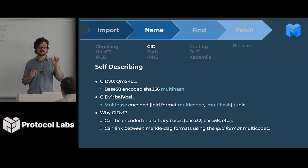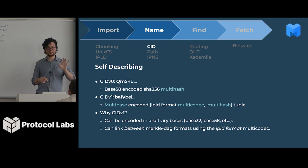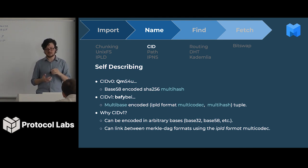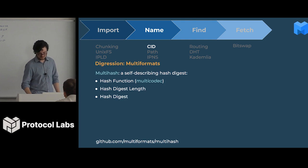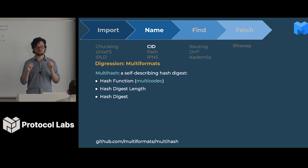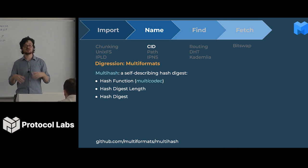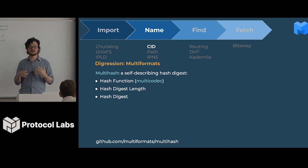A multihash is a special type of hash. It includes the hash digest and something called a multicodec that indicates the type of hash function used to produce the digest. CIDv1 is a multibase-encoded IPLD format plus multihash tuple. A multihash is a self-describing hash digest — I give you the SHA-256 output and then a number that is the multicodec to indicate which function we used. This way, I can decide to use SHA-2, SHA-3, or SHA-1 in the future, and you'll know which one I'm using because I include it in the hash itself.